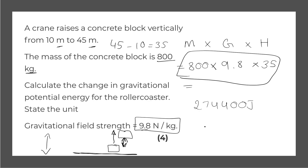We can convert 274,400 joules to kilojoules, which gives us 274.4 kilojoules. This question is worth 4 marks: one for the working out, one for calculating the height difference of 45 minus 10, one for converting to kilojoules, and one for the correct answer. And that is it for this video.